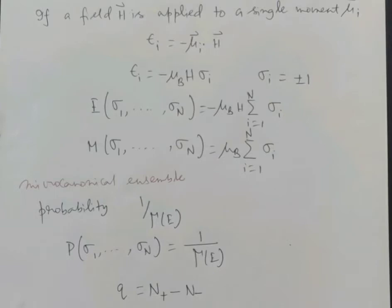One can illustrate this with the isolated paramagnet, which is an example of the microcanonical ensemble. We discuss the number of states and probabilities here. When trying to determine the ensemble and decide on the occurrence rates of distinct microscopic states of a system, it is vital to take into account the strict constraints.